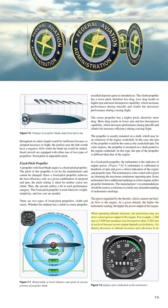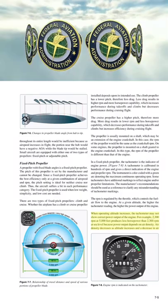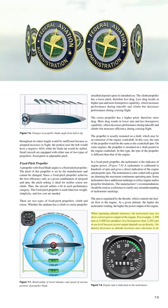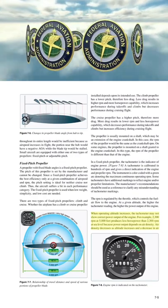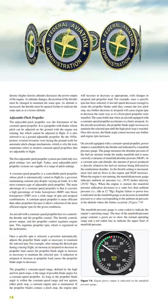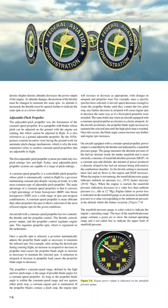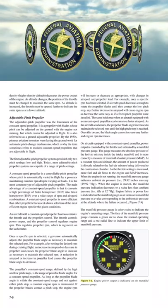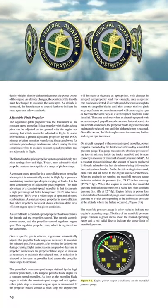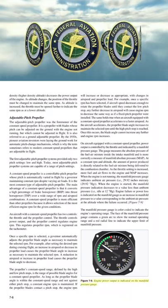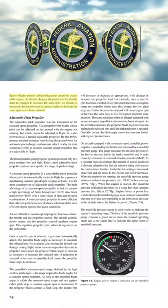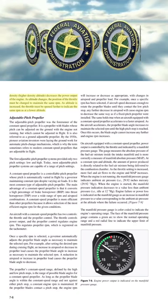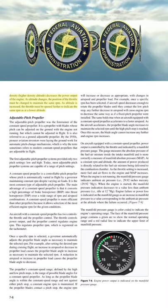When operating altitude increases, the tachometer may not show correct power output of the engine. For example, 2,300 RPM at 5,000 feet produces less horsepower than 2,300 RPM at sea level because power output depends on air density. Air density decreases as altitude increases, and a decrease in air density means higher density altitude decreases the power output of the engine. As altitude changes, the position of the throttle must be changed to maintain the same RPM — the throttle must be opened further to indicate the same RPM as at a lower altitude.